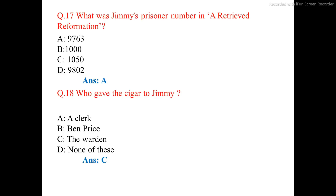Question number 18. Who gave the cigar to J.B. Shaw? The correct answer is option C: the warden.